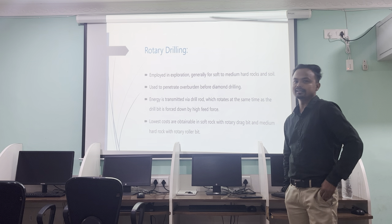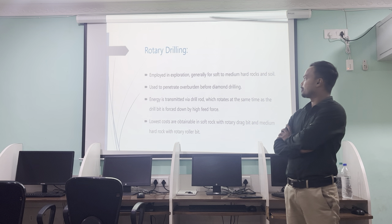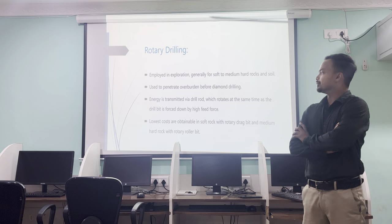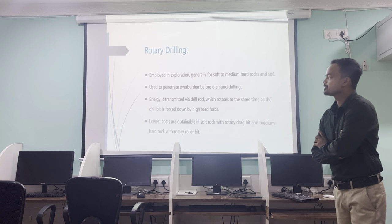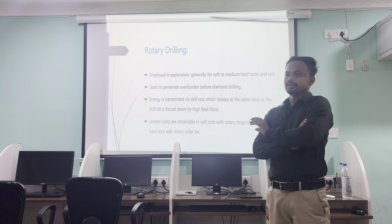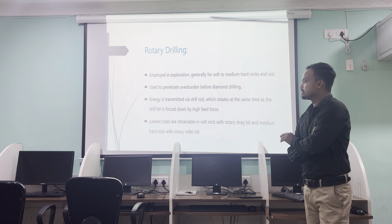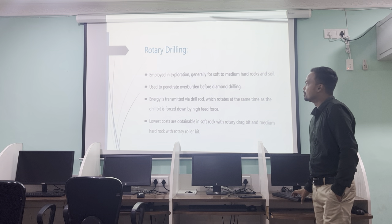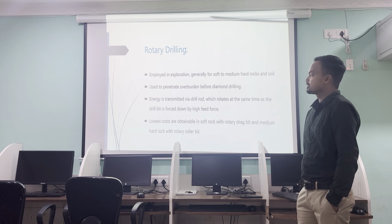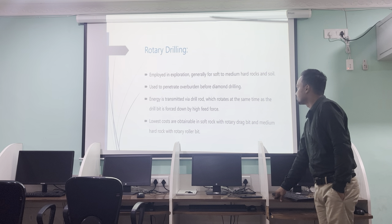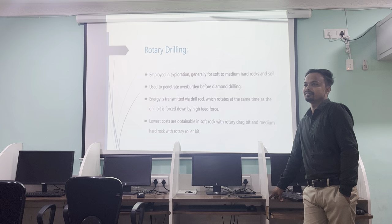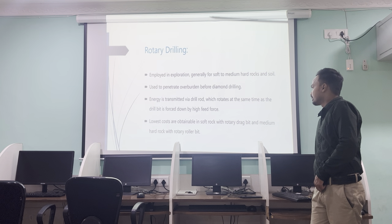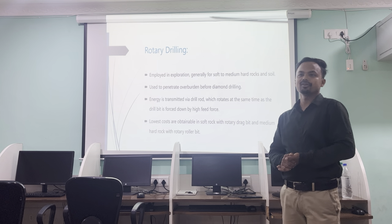First we will discuss rotary drilling. Rotary drilling is used for exploration and generally suits soft to medium hard rocks and soil. It is used to penetrate overburden before blast hole drilling. Overburden is the first layer of rock or soil in mines, which is hard in nature — we excavate the overburden first, then the mineral. Energy is transmitted through a drill rod which rotates while the drill bit is forced down at high speed. Lowest costs are obtainable in soft rock with rotary drag bits and medium hard rock with rotary roller bits.